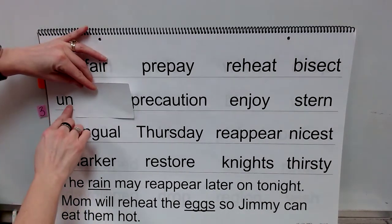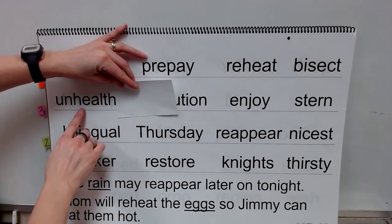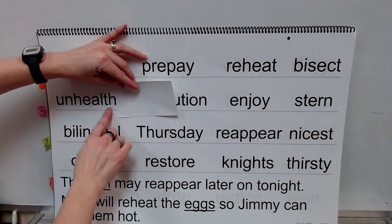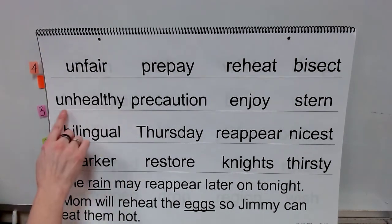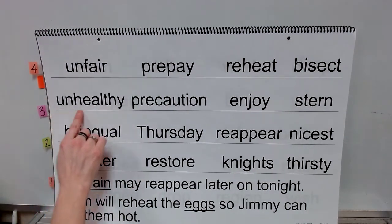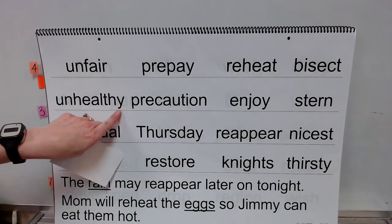Prefix: un. Base word: health. Ending: y. Word: unhealthy. That's a suffix.